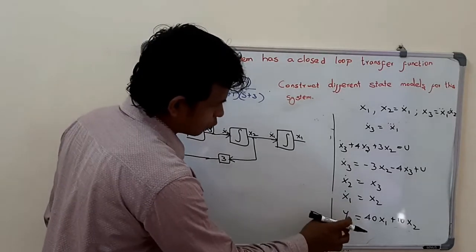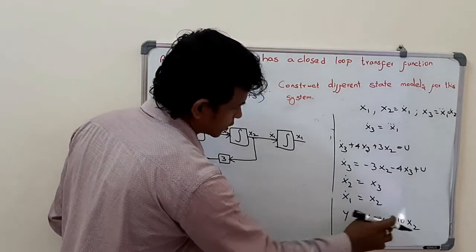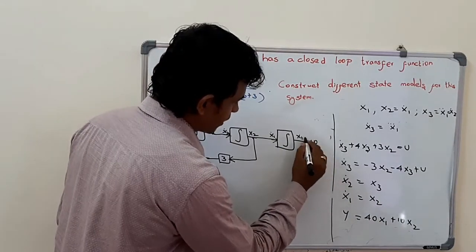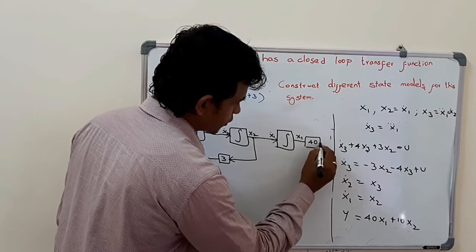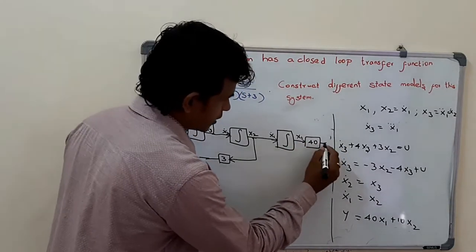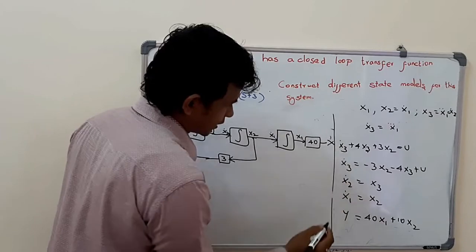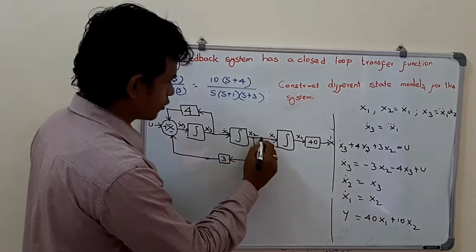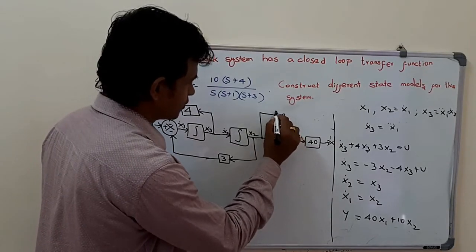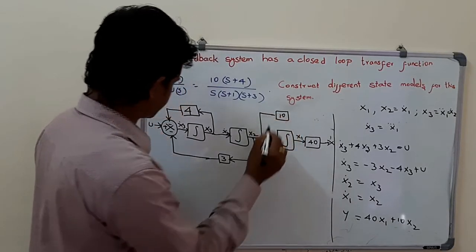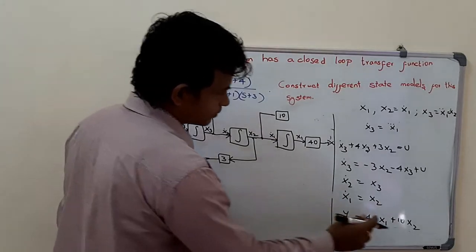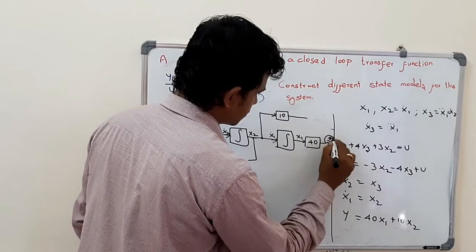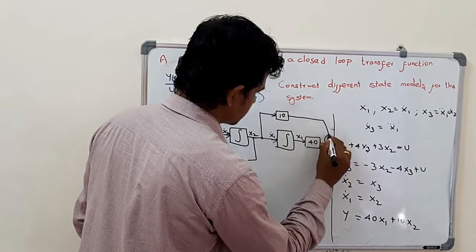For the output equation, y = 40x1 + 10x2. The value x1 is scaled by 40 giving 40x1, and x2 is scaled by 10 giving 10x2. These are connected to an adder to produce the output y.